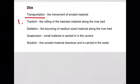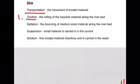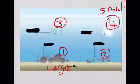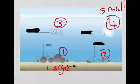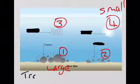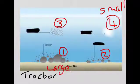Number one would be moved by traction. This is the rolling of the heaviest material along the riverbed. So you can see number one here represents traction, the rolling of the heaviest material along the riverbed. I try to use this as the idea of a tractor wheel rotating, moving heavy material.